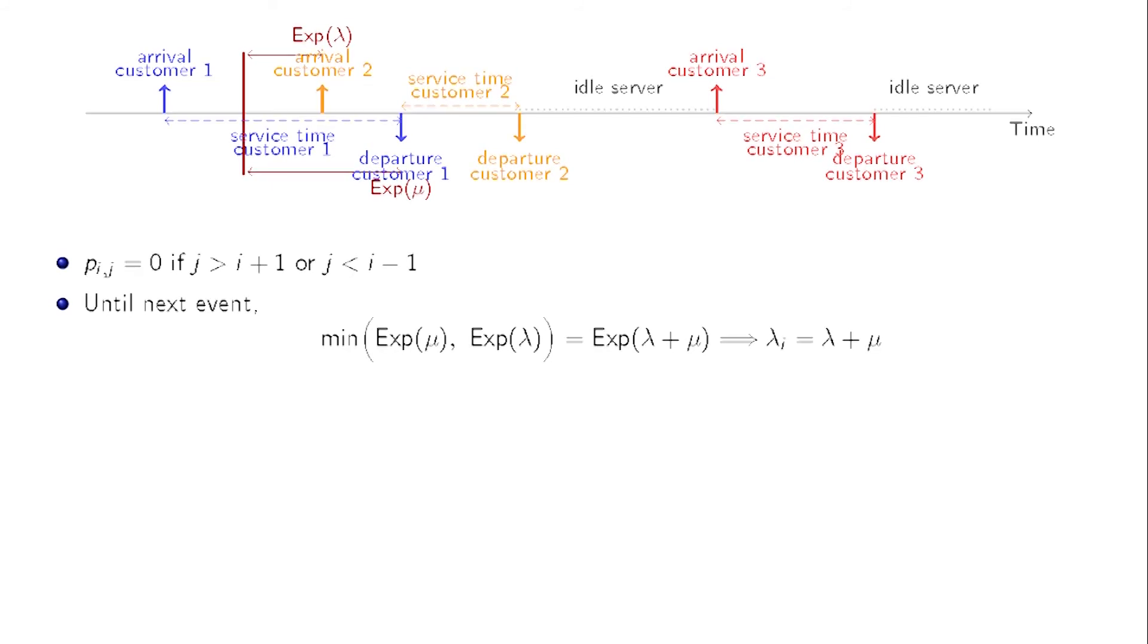The next departure happens in an exponential time of intensity mu. So, the next event happens at the minimum of these two time lapses, which, as we know, is distributed as an exponential random variable of parameter lambda plus mu. This means that lambda_i is equal to lambda plus mu.